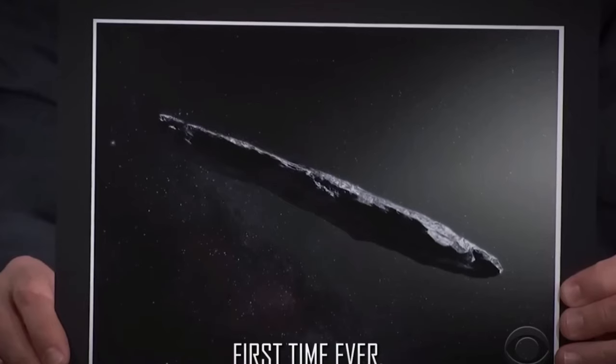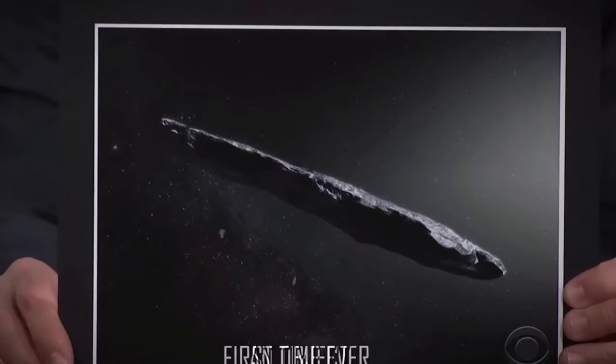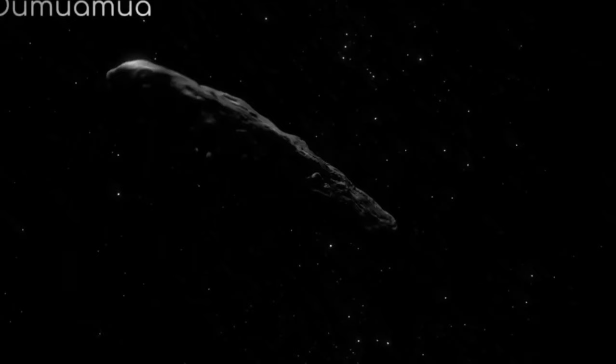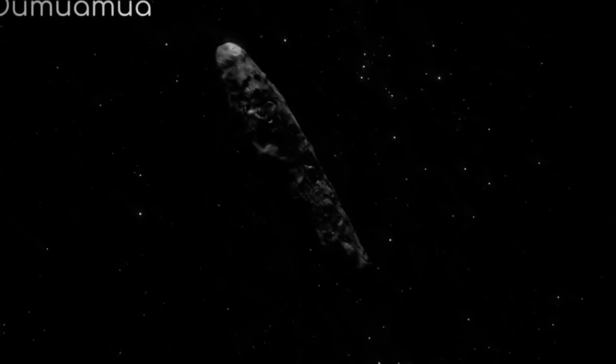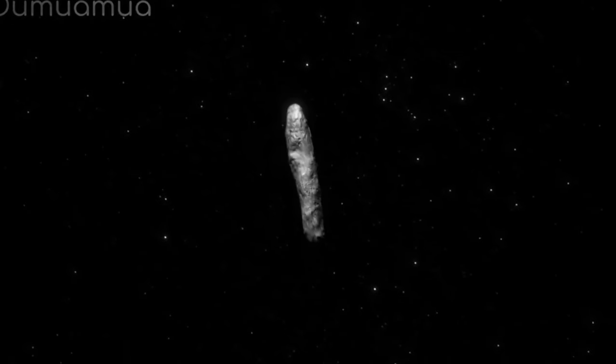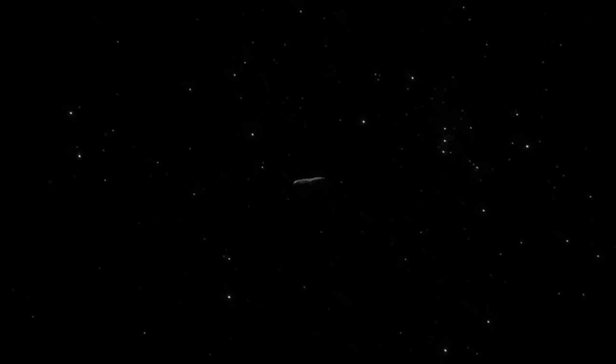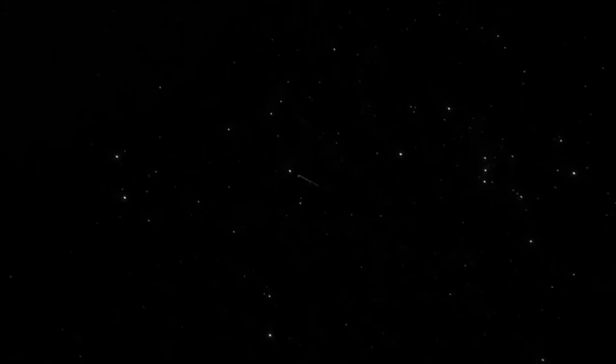As the inaugural interstellar visitor on record, Oumuamua offers a glimpse into the dynamics of planetary systems beyond our own. Oumuamua stretches up to a quarter mile in length, boasting an extraordinary elongated shape, potentially 10 times longer than its width. Such proportions surpass any known asteroid or comet within our solar system.